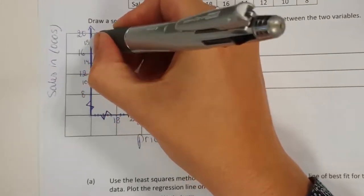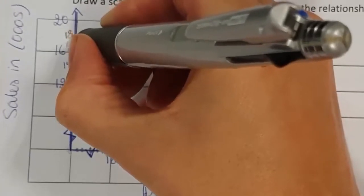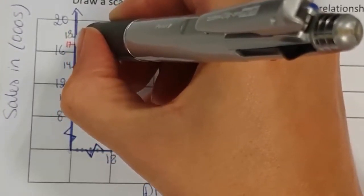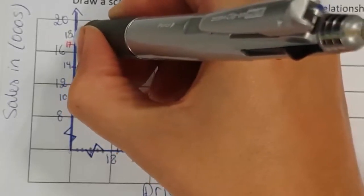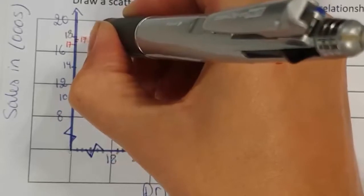16 is right here, 18 is right there. So this is 17. This right here will be 17.5. So about right here will be 17.7.